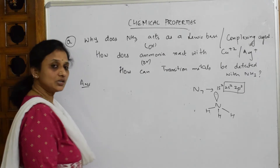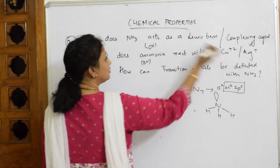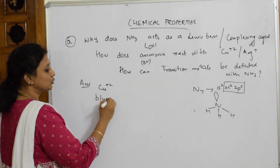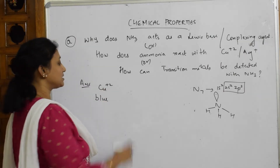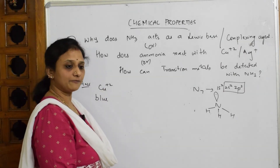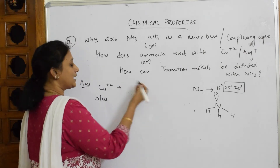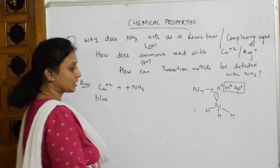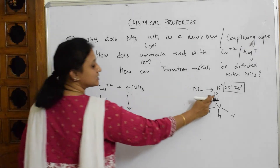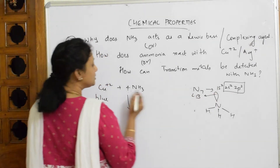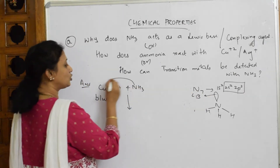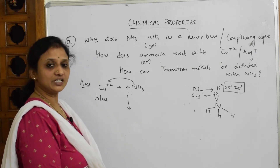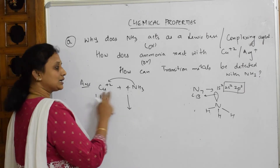Now I have to prove ammonia as a complexing agent. Suppose I want to identify copper — copper is a transition metal and its ion Cu²⁺ is blue. To identify its presence, I add ammonia. Taking 4 moles of ammonia, ammonia being a Lewis base donates its lone pair of electrons to copper. When it donates a lone pair to copper, it acts as a ligand — we've studied this in coordination chemistry, where we have a central metal atom and a ligand.